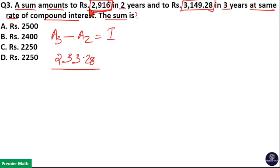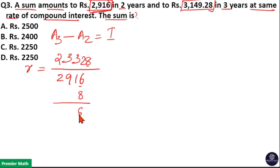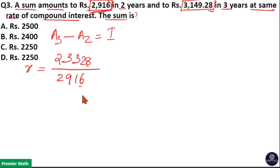The amount at the end of two years becomes the principal for the third year, so 233.28 is the interest received from principal 2916. Converting to percentage: rate of interest equals (233.28 / 2916) × 100. Multiplying out, the unit digit check confirms 2916 × 8 gives 23328, so the rate of interest is 8%.